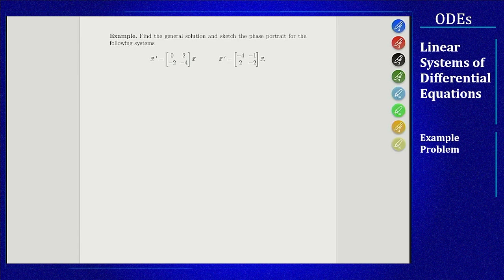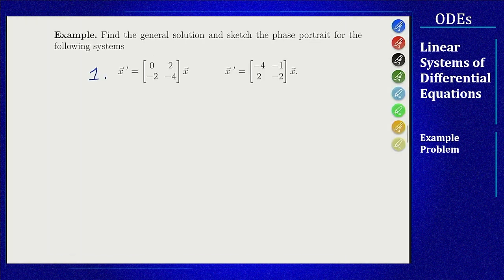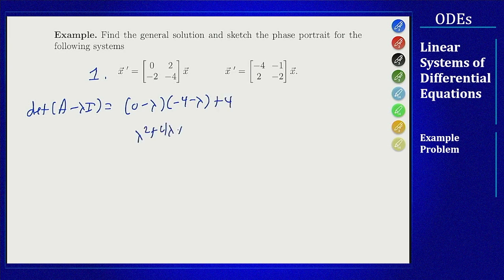General solution first. For this first one we're going to start by finding the eigenvalues and eigenvectors. For the eigenvalues, the determinant of A minus lambda I is given by 0 minus lambda, minus 4 minus lambda, plus 4, equals lambda squared plus 4 lambda plus 4, which is lambda plus 2 squared. It's a repeated eigenvalue with eigenvalue negative 2.